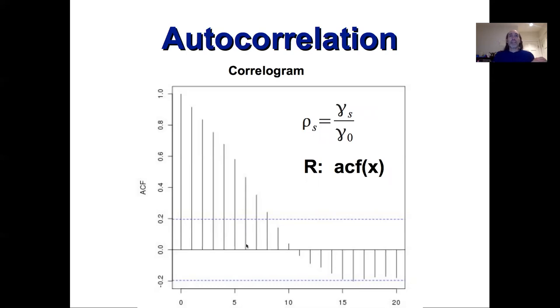So when we look at autocovariance, it's very common that instead of looking at actual covariance we look at correlation. And so here this ρ_s is going to be the autocovariance at lag s divided by the autocovariance at lag zero. So the correlation is just the covariance normalized by the variance, because remember the autocovariance at lag zero is just the variance in the data set.